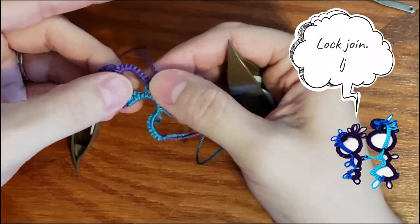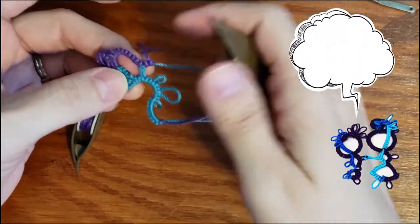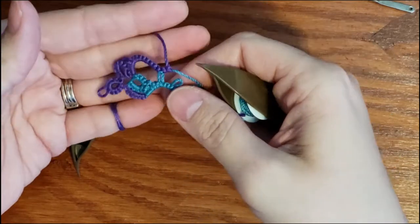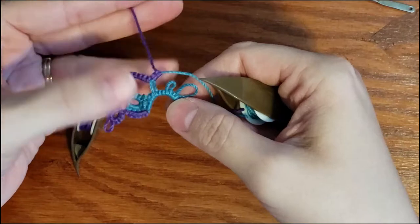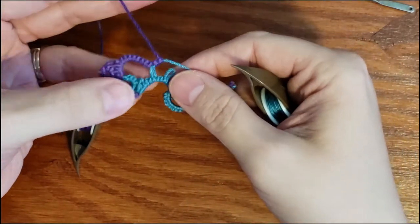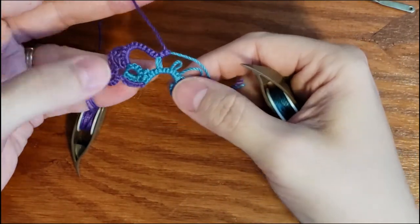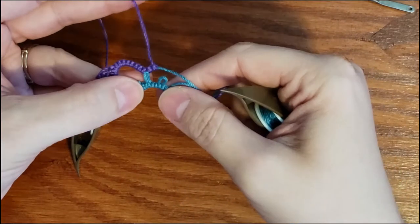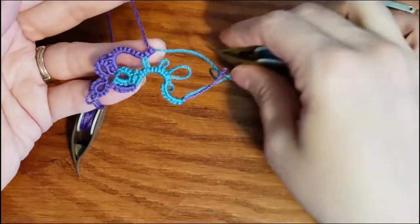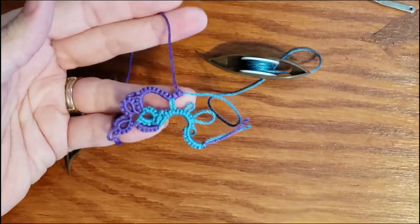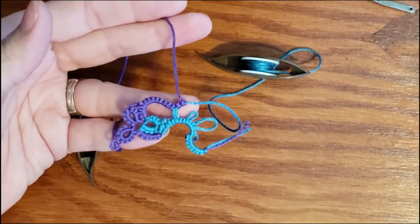So lock join or shuttle join is done like so. So you can see we're starting to form shapes here now with our practice piece. We're no longer just throwing rings off of a line. We've now joined in different places and we've got some shape coming into our pattern. And this is how we end up making the different designs in tatting.